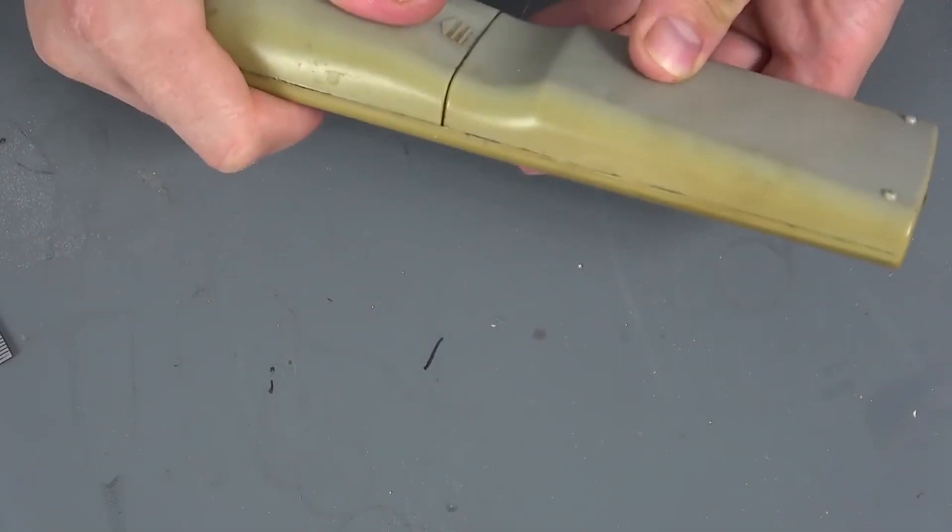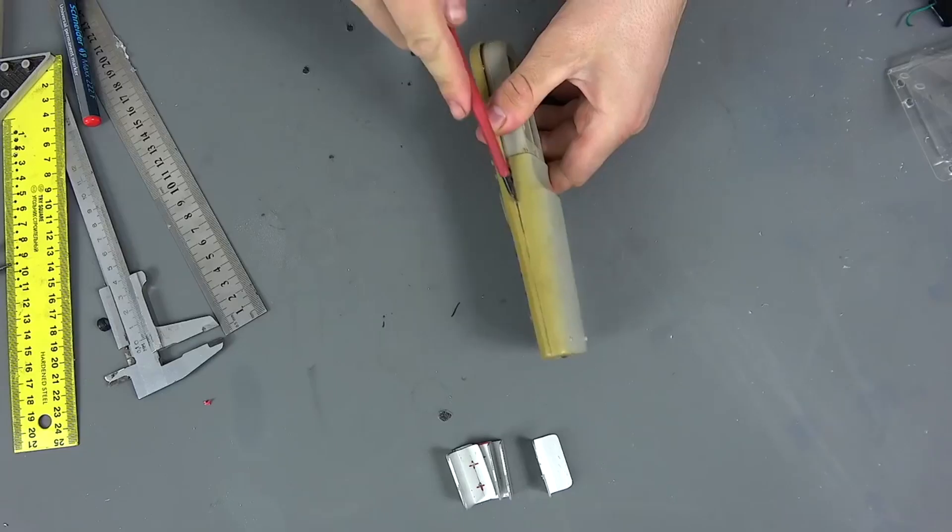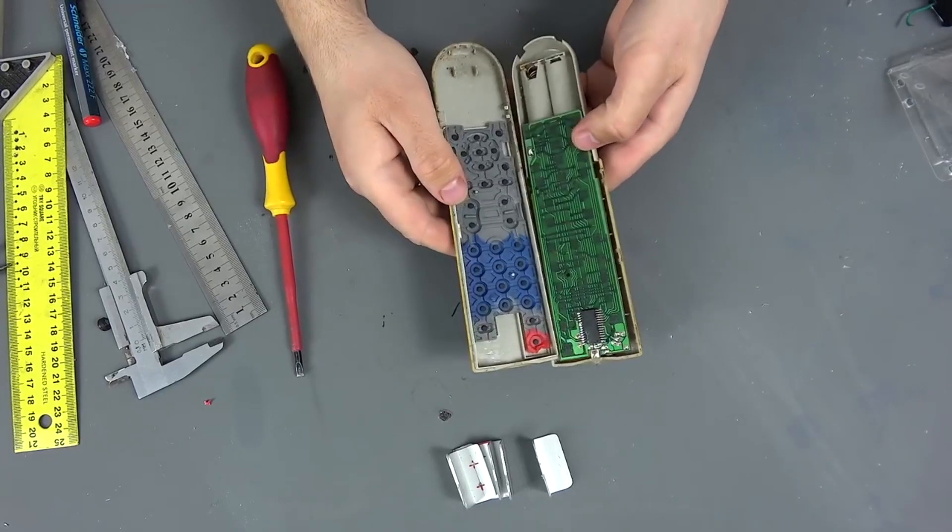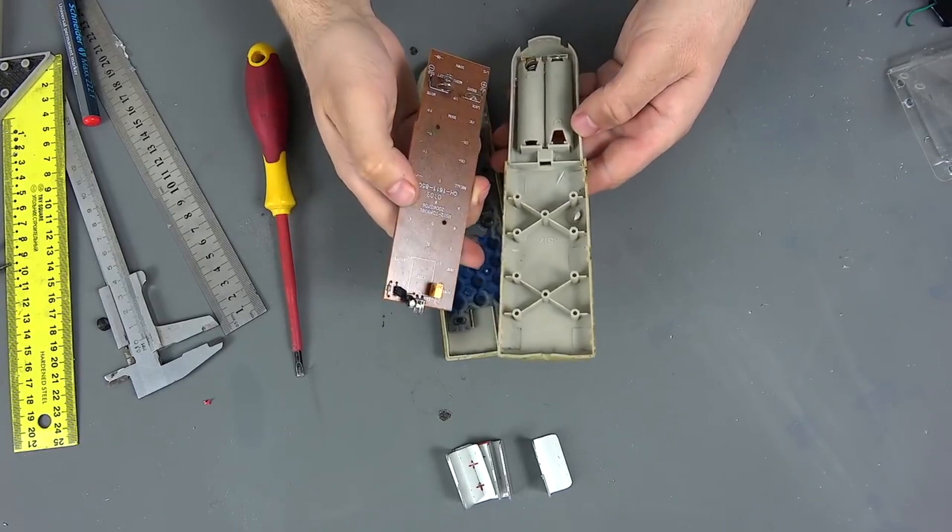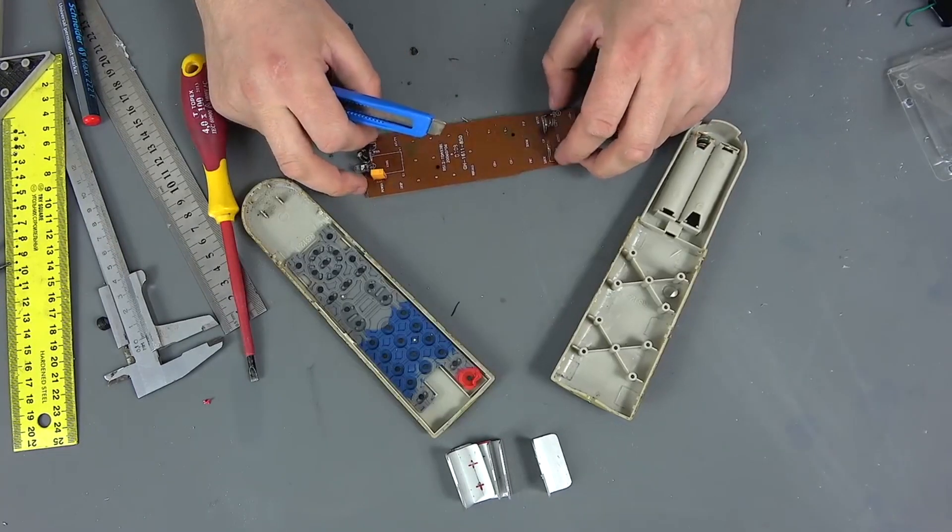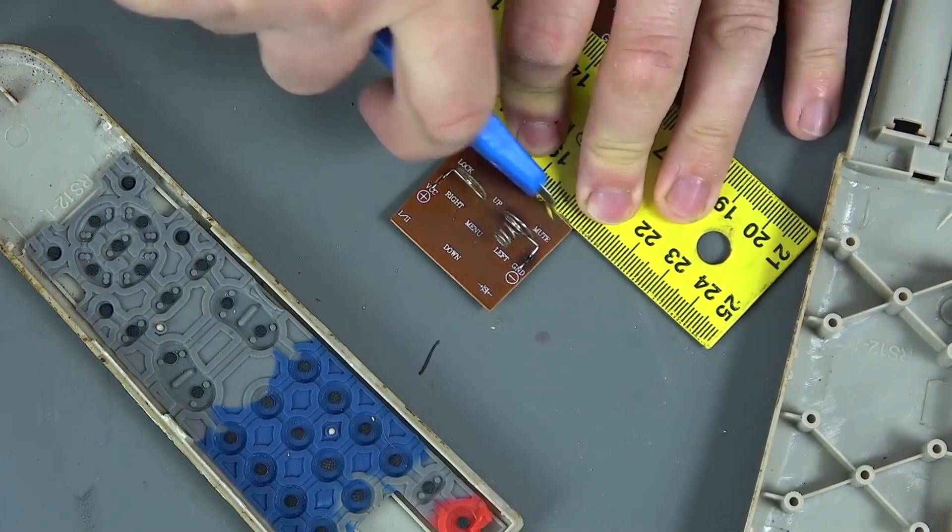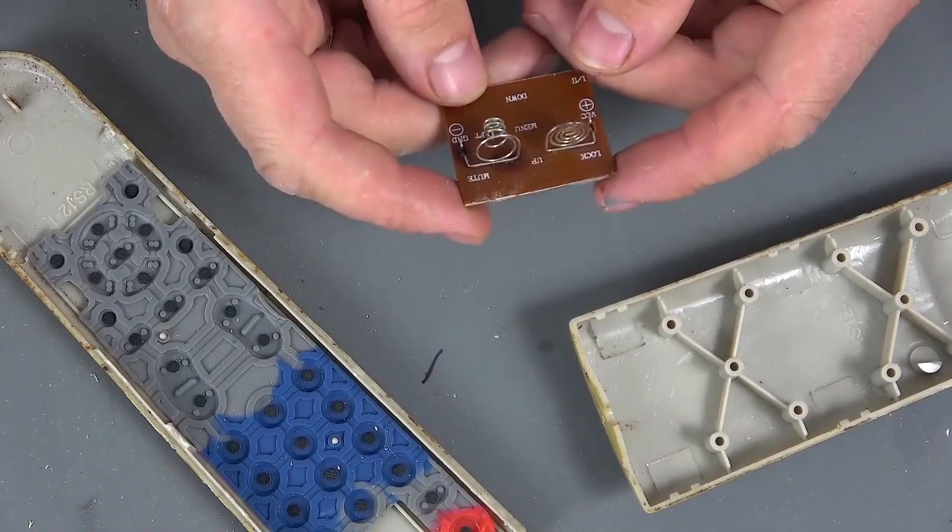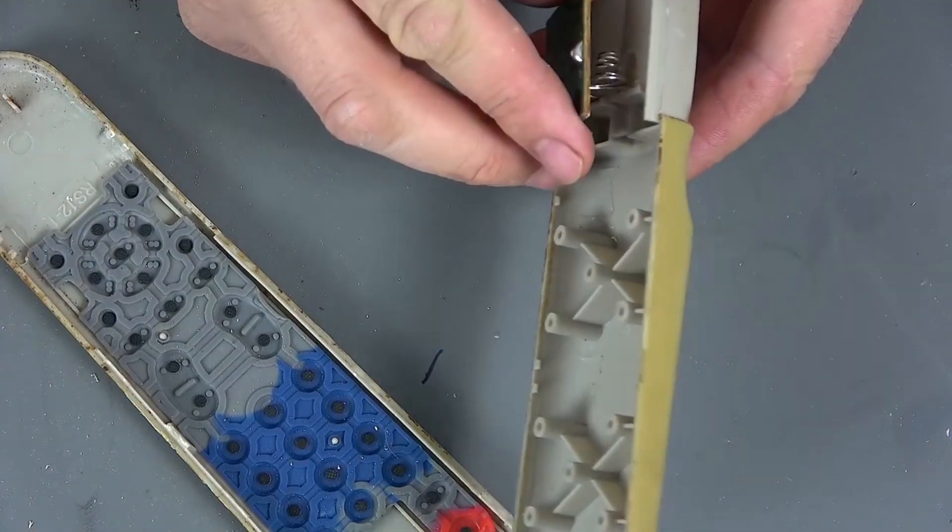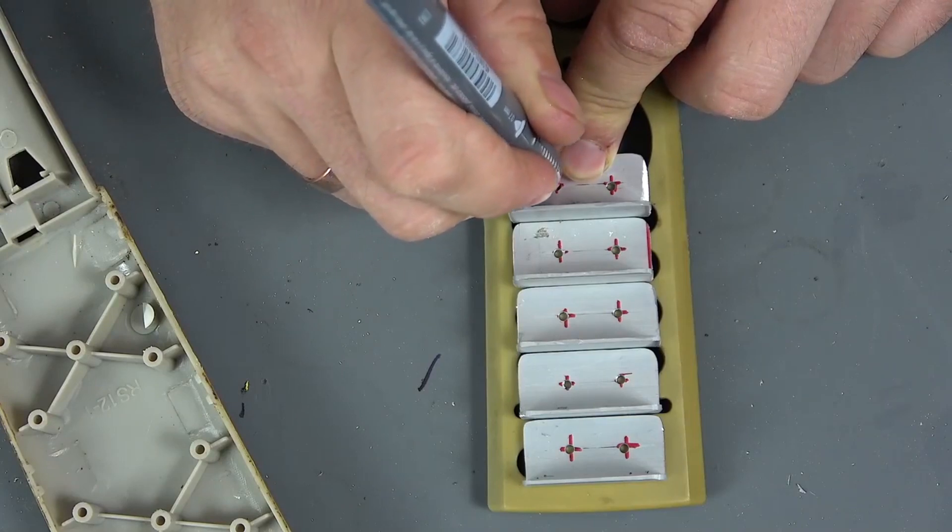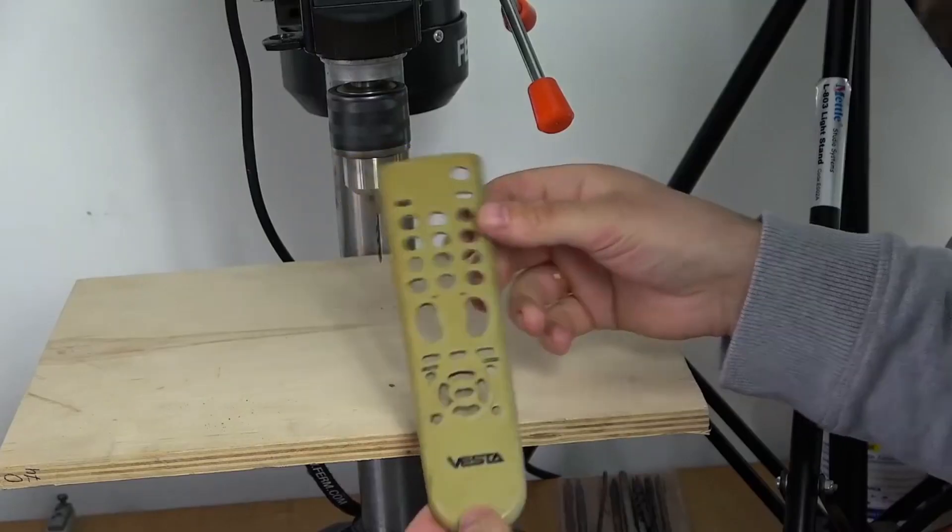Now we disassemble the remote control and leave only the battery case. We apply the first profile, put a label, make a hole.